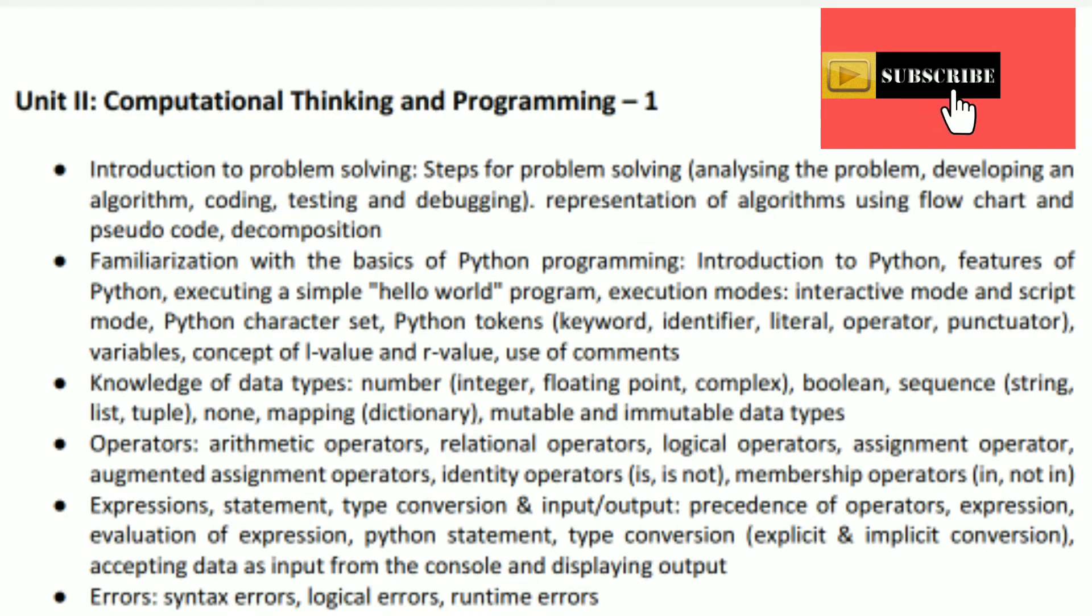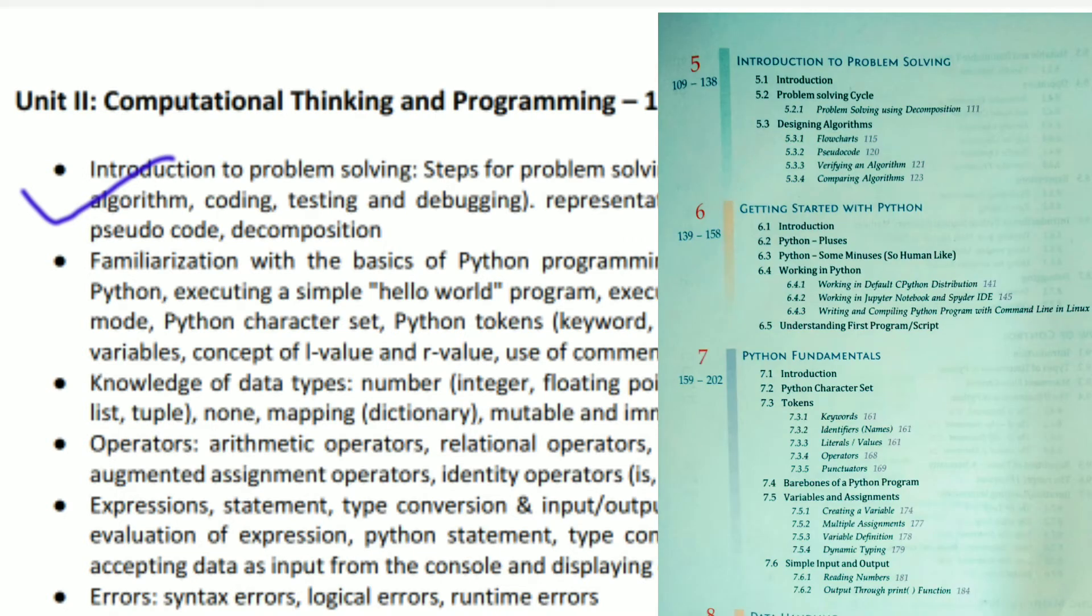Let's start with Unit 2. In Unit 2, the very first point is Introduction to Problem Solving, where we will be knowing about algorithms and flowcharts. We have a fresh chapter, that is chapter number 5, Introduction to Problem Solving. Coming to next, we are having familiarization with the basics of Python. Basics of Python means now we are going to start Python language. Now all these basics are available in chapter number 7, that is Python Fundamentals, where you will be knowing about tokens, input-output, all this you will be knowing in chapter number 7.